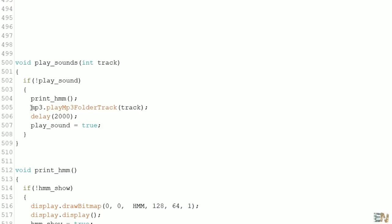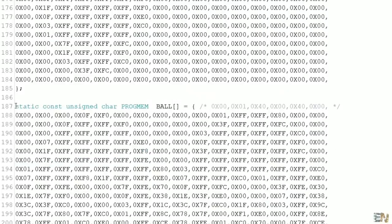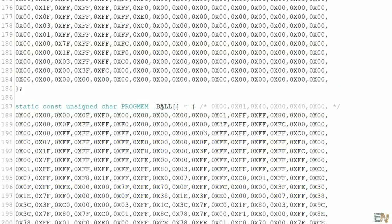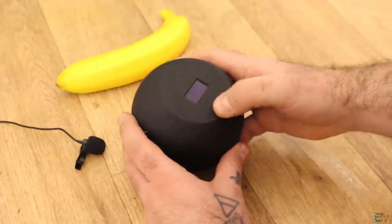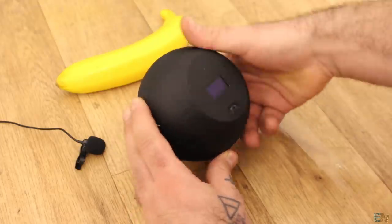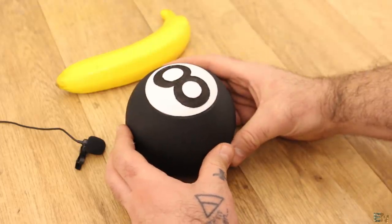At the same time, using the MP3 library, we control the sounds from the SD card, one sound for each answer. I've also created the logo for the 8 Ball and print that on the screen as well. So the code is pretty much that easy. So now you turn on the ball with the sliding switch, then you make the question and flip the ball with the screen towards you, and you'll get your magical answer.